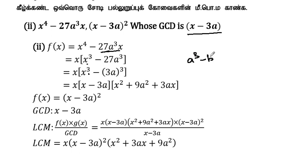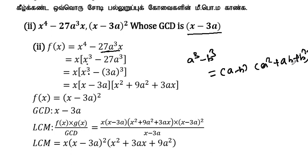Using the identity a³ - b³ = (a - b)(a² + ab + b²), where a is x and b is 3a, we get f(x) = x(x - 3a)(x² + 3ax + 9a²). And g(x) is (x - 3a) whole square, with GCD equal to x - 3a.